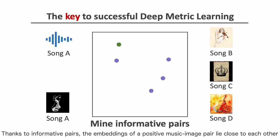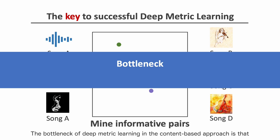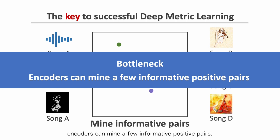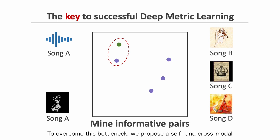Thanks to informative pairs, the embeddings of a positive music-image pair lie close to each other, and those of a negative pair lie far from each other in the shared embedding space. The bottleneck of Deep Metric Learning in the content-based approach is that encoders can mine only a few informative positive pairs. In this case, only an original music-image pair can be a positive pair.